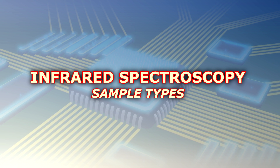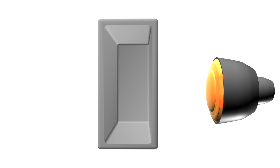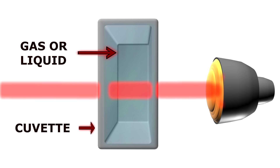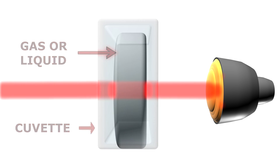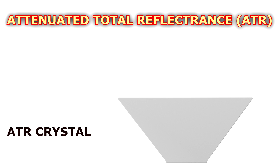Infrared spectroscopy can be used to study a variety of samples, but each situation may need a different approach. For instance, the most common way to study liquids and gases is placing them inside a cuvette that will be irradiated with infrared radiation. Note that a similar setup also works for solids that are semi-transparent for infrared radiation. However, solids — and in some cases liquids — are usually studied by utilizing the attenuated total reflectance technique.